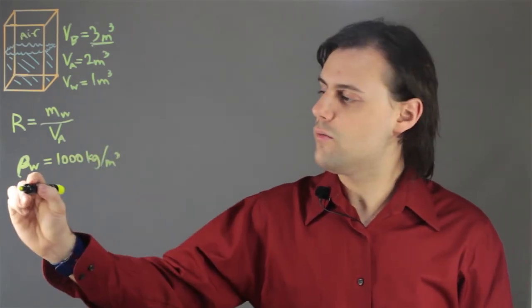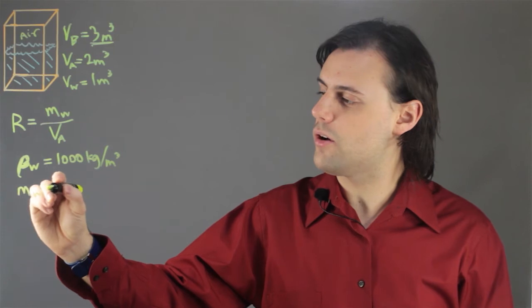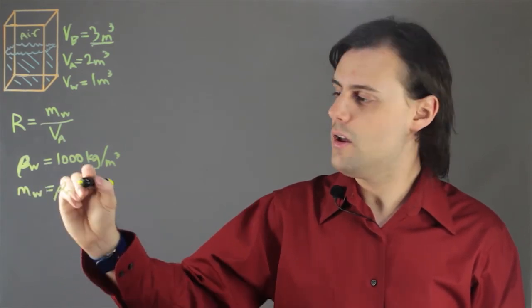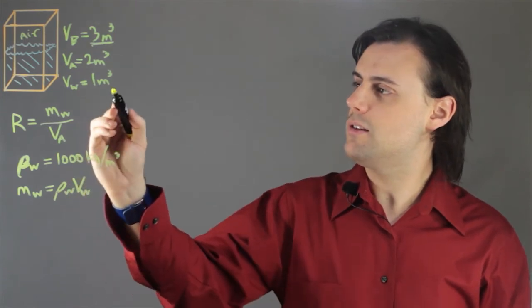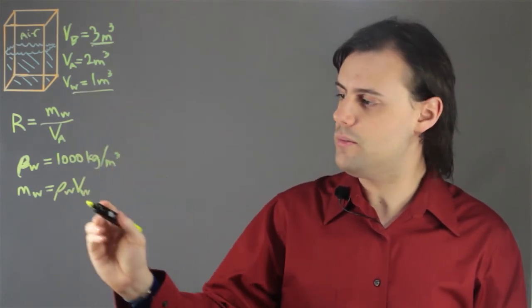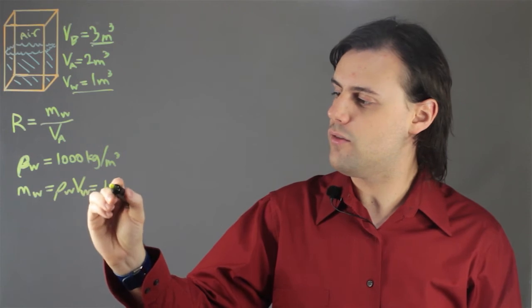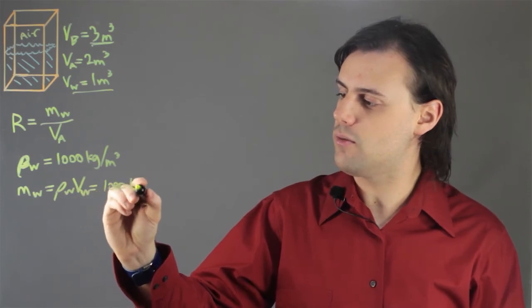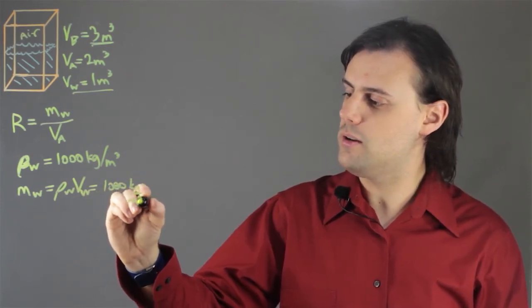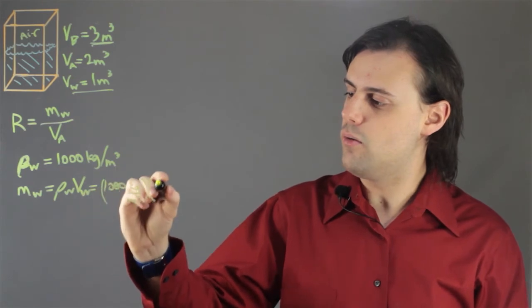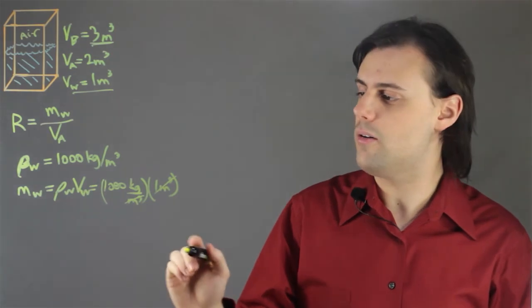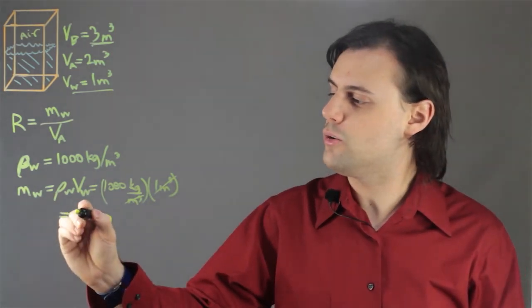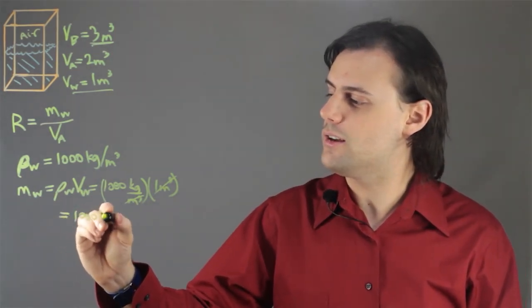Therefore, we can calculate the mass of the water by multiplying the density of the water with the volume that the water inhabits. In this case, we have 1 meters cubed. So we have 1,000 kilograms per meters cubed times 1 meters cubed. The units of the cubic meters cancels out and we're left with a total mass of 1,000 kilograms.